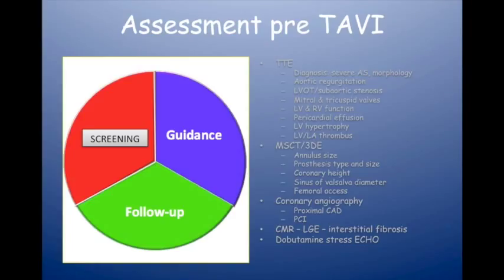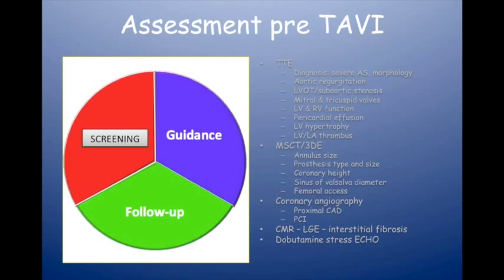We want to know if there's a pericardial effusion present, as we can make it worse during the procedure. Left ventricular hypertrophy is important — if it's moderate or severe, when we rapidly pace the patient and lose pacemaker capture, the valve can eject during delivery and end up in the aorta. That's not ideal; the patient's brain usually suffers. Finally, left ventricular thrombus must be excluded — that's a contraindication to the TAVI procedure.